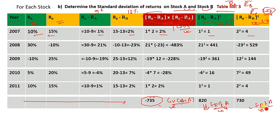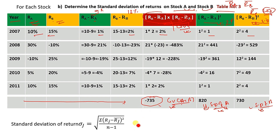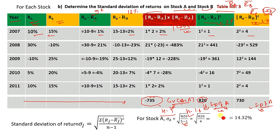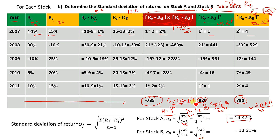The standard deviation formula is the square root of the sum of (R_A minus the expected return of R_A) squared, divided by n minus 1. Here, n minus 1 is equal to 4. The standard deviation of Stock A is equal to 14.32%. The standard deviation of Stock B is equal to 13.51%.